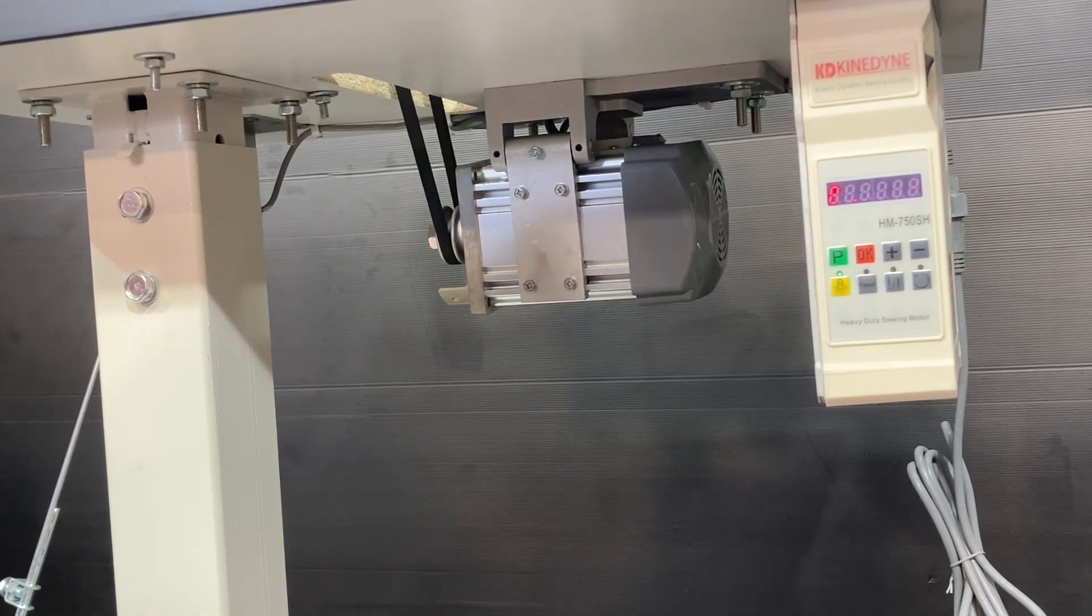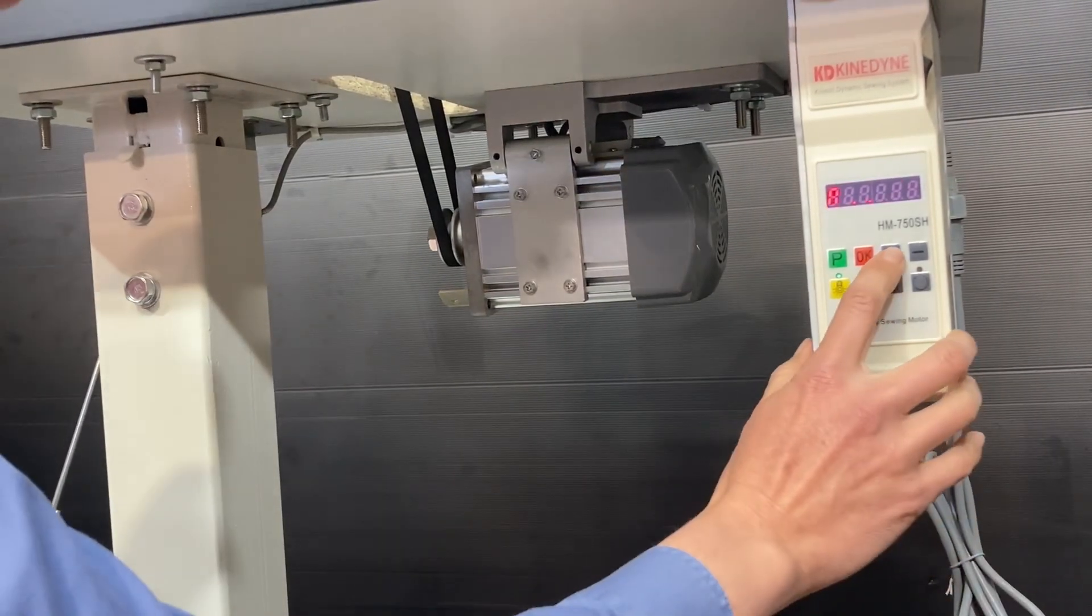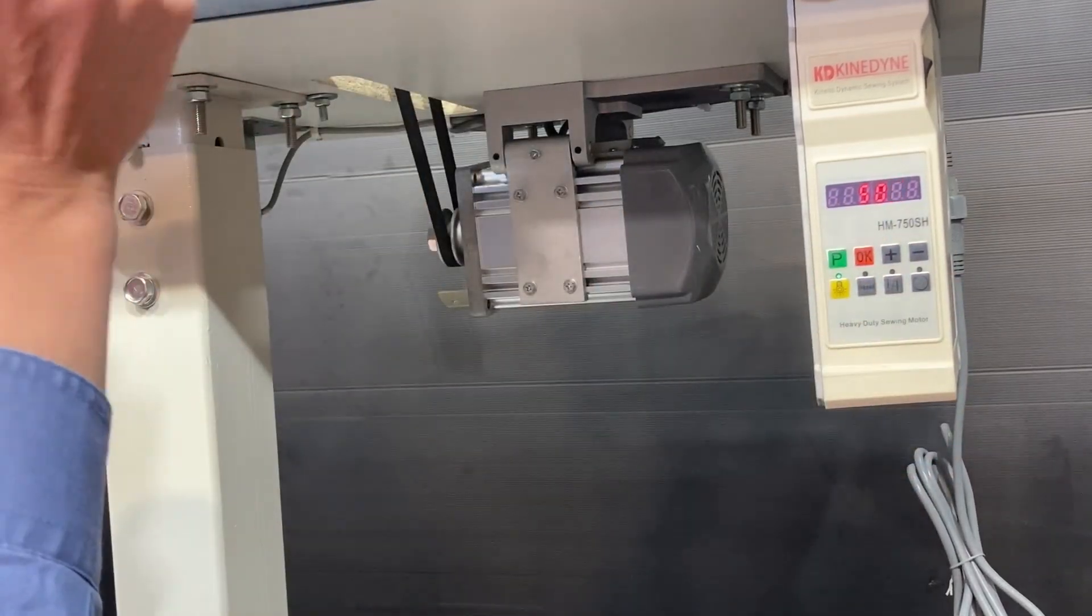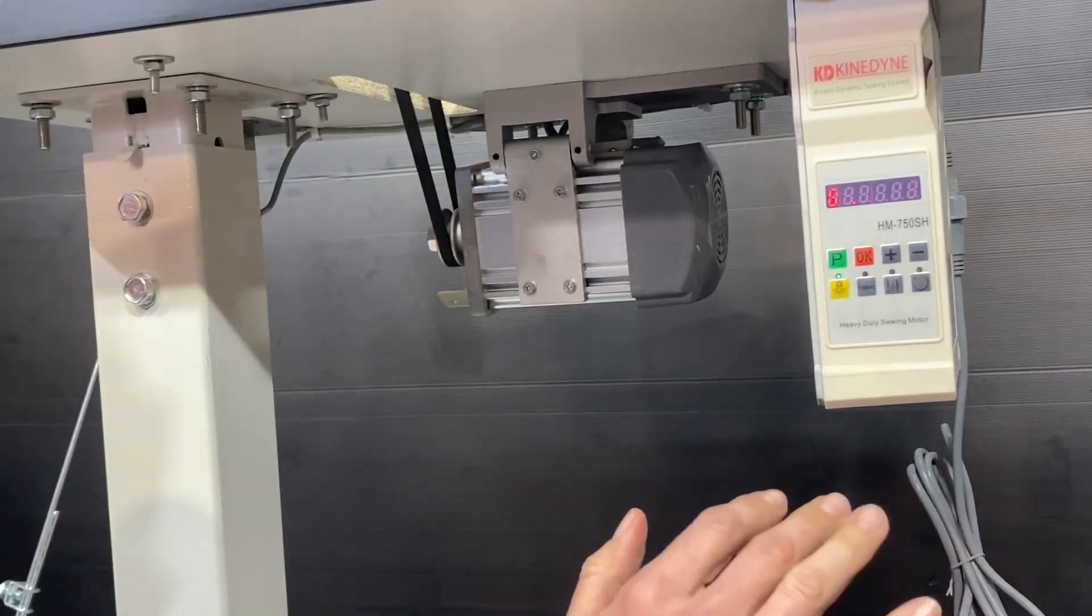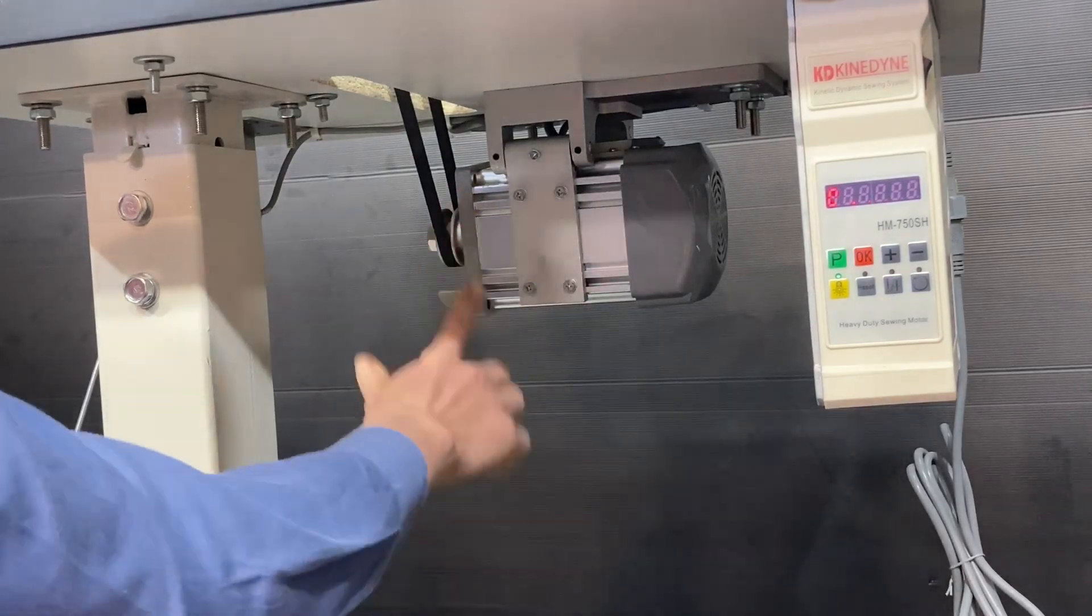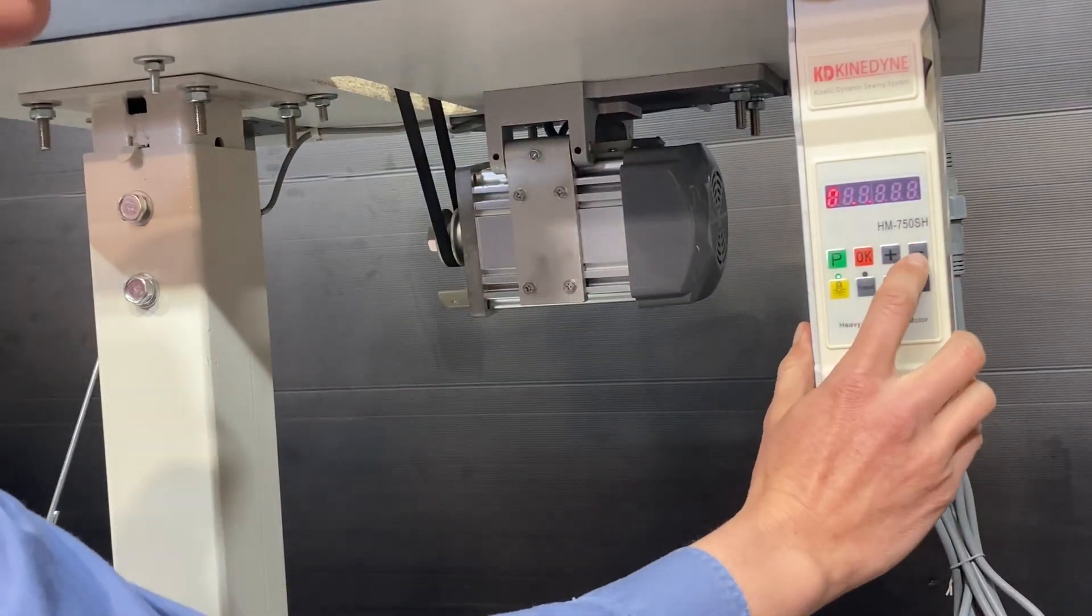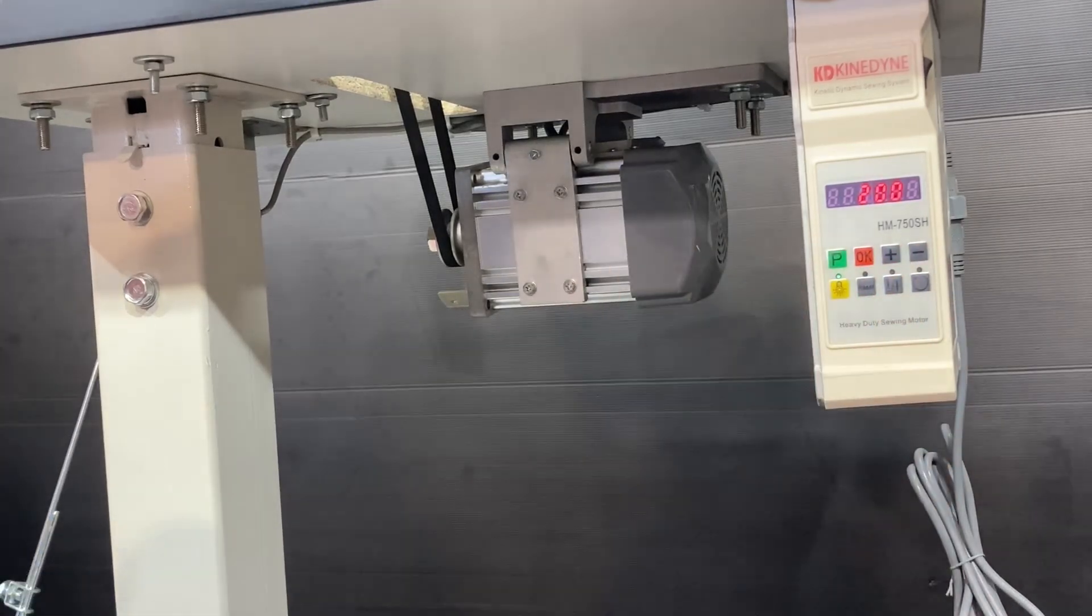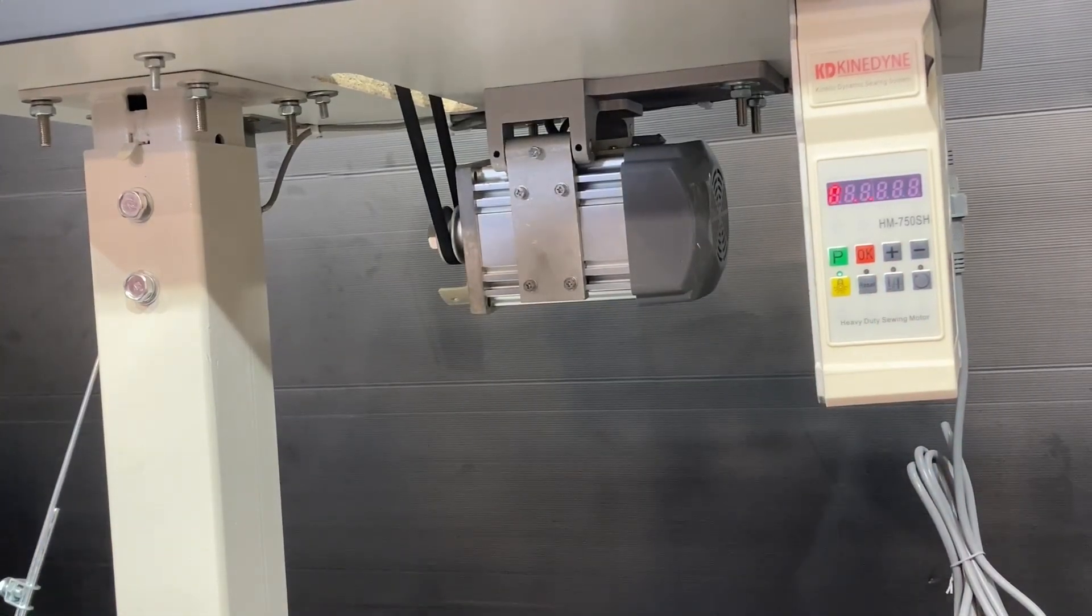So even if you put your foot flat to the floor, the factory setting is 500. Foot flat to the floor, it will only do 500 RPM at the motor. You can drop that right down if you really want to be certain that it's not going to go very fast at all.